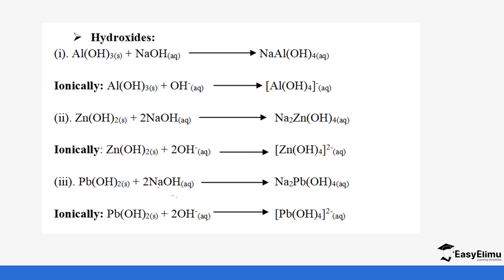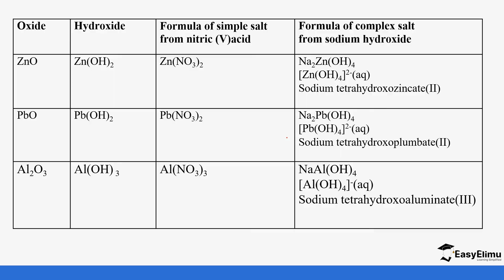Hydroxides behave in the same manner. For aluminum hydroxide with sodium hydroxide, you get the same aluminate product. Zinc hydroxide with sodium hydroxide gives sodium zincate, the tetrahydroxozincate complex. For lead hydroxide with sodium hydroxide, you get sodium plumbate. Make sure you remember these formulas because we are going to use them in the next lesson on qualitative analysis.